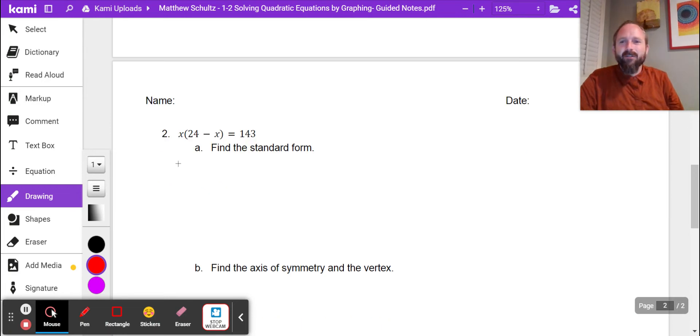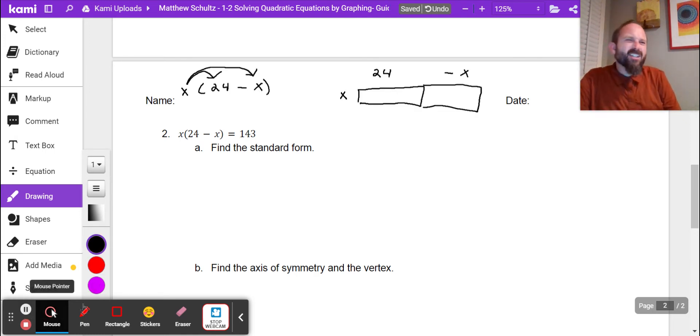We have something that is not in our standard quadratic form, so let's put it into there. There's actually two different ways we could do it. We could do the distributive property, which is multiplied to each one, and we get 24x minus x squared. Or we could do it this way, which will help us later. This is x times 24, so it is 24x. And this is x times negative x, which would be negative x squared. Make sure you remember that.